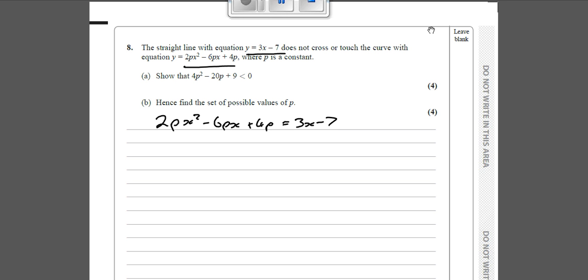Another way of saying that we can't have this equals this is to get everything from this side over to the left hand side: 2px² - 6px - 3x + 4p + 7 equals 0. There's going to be no solutions to that.